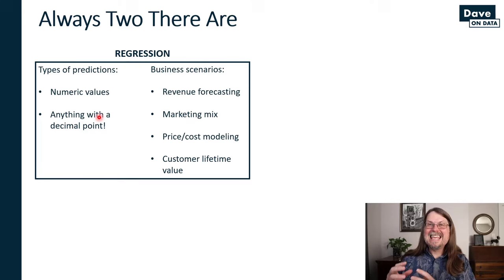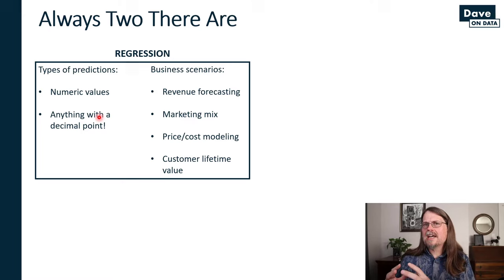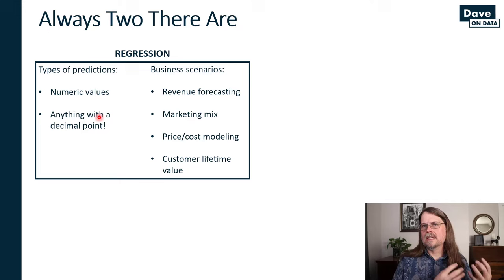That includes not just the business world, but also the realm of science. In the business world, regression is absolutely useful. However, what you tend to see is that the next family has more prominence than in science. And that is classification.